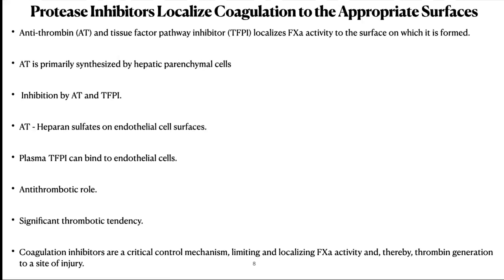Plasma TFPI can bind to endothelial cells, and another form — TFPI beta — is tethered to endothelial surfaces by glycosylphosphatidylinositol linkages. Localization to the endothelial surface allows this protease inhibitor to specifically play an antithrombotic role by inhibiting activated factors that diffuse to or are inappropriately formed on the endothelium. A deficiency of antithrombin is associated with a significant thrombotic tendency. Coagulation inhibitors are critical control mechanisms limiting and localizing clotting factor activity and thereby thrombin generation to the site of injury.